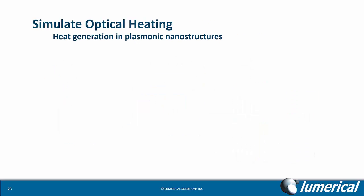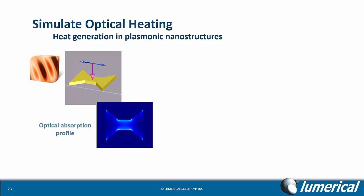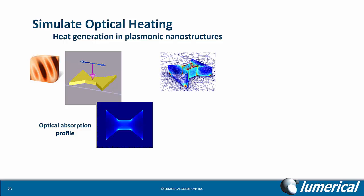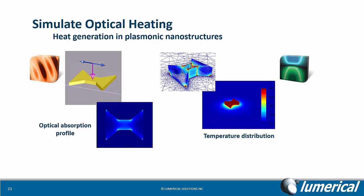And to simulate optical heating in plasmonic nanostructures, for example, we can start by using FDTD Solutions to calculate the optical absorption profile. This can then be used as a heat source in the heat transport simulation and device, where we can calculate the resultant temperature distribution.